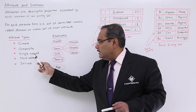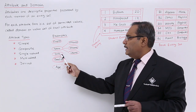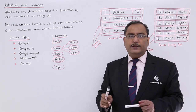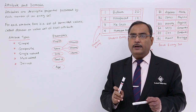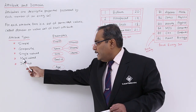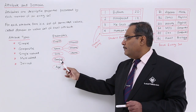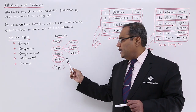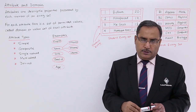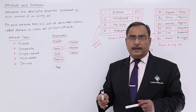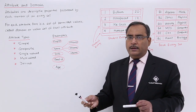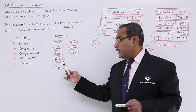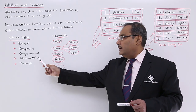Now, what is a single-valued attribute? Date of birth is a good example — a person cannot have more than one date of birth, so DOB is a single-valued attribute because it can contain only one value. On the other hand, for a multi-valued attribute, employee email ID is a good example. In the ER diagram, it is represented using a double ellipse. One person can have multiple email IDs — at least one corporate and one personal — so email ID is a good example of a multi-valued attribute.